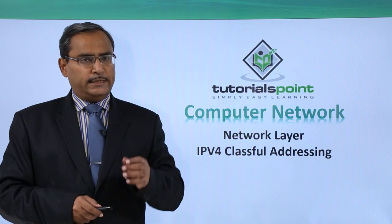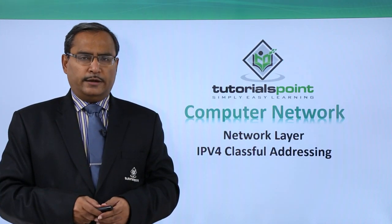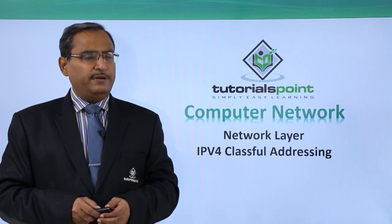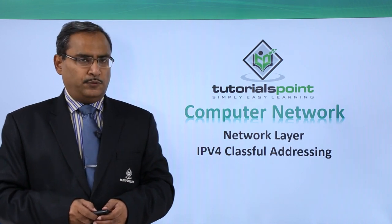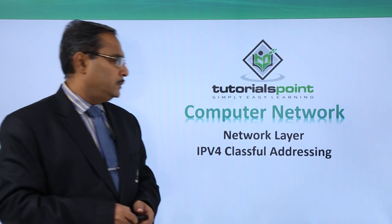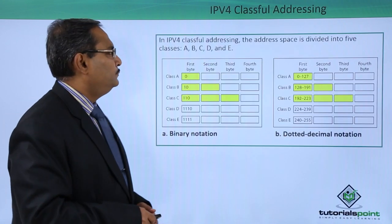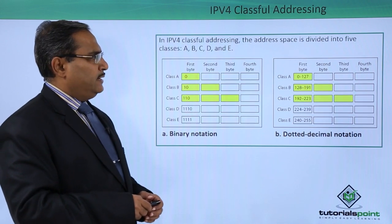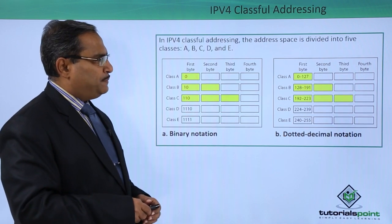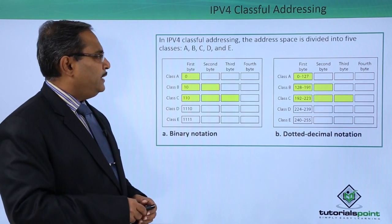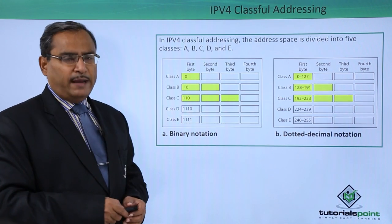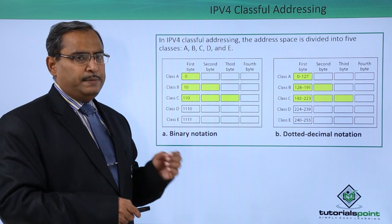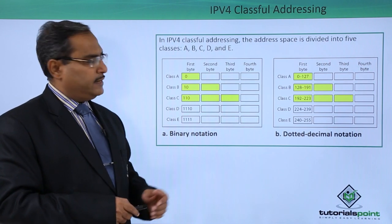In this video, we are discussing network layer IPv4 Classful Addressing. In IPv4 Classful Addressing, the address space is divided into 5 different classes: A, B, C, D, and E.